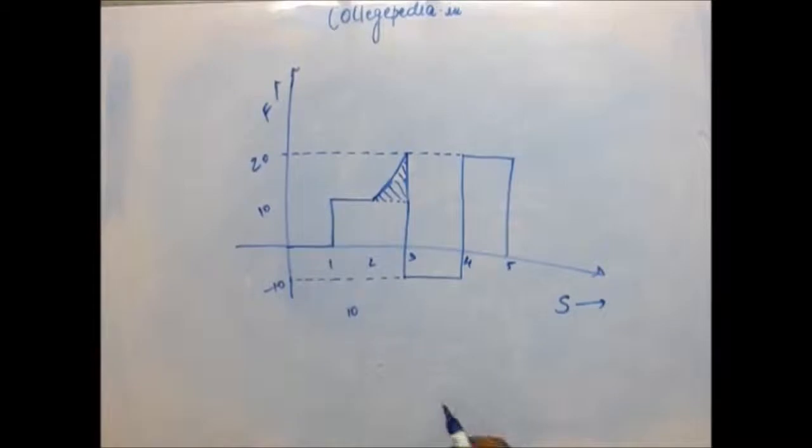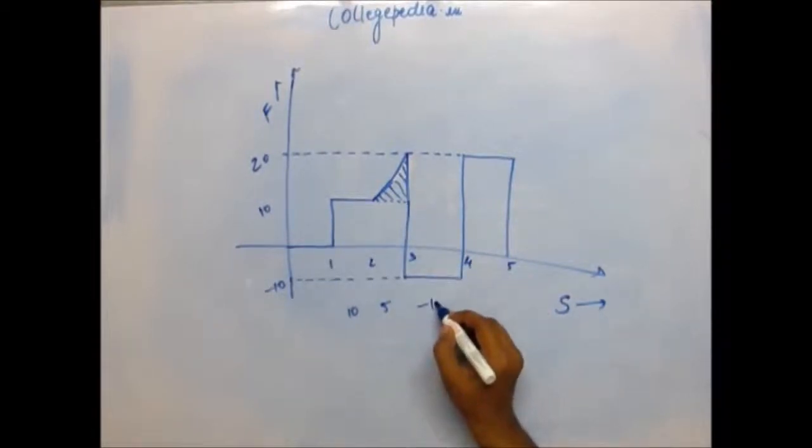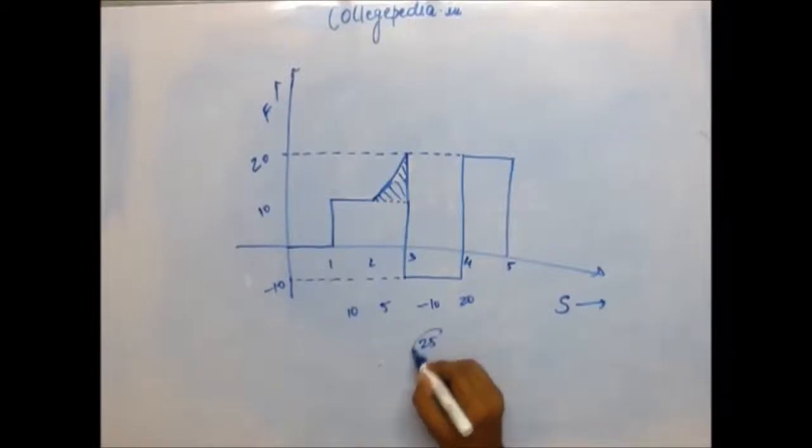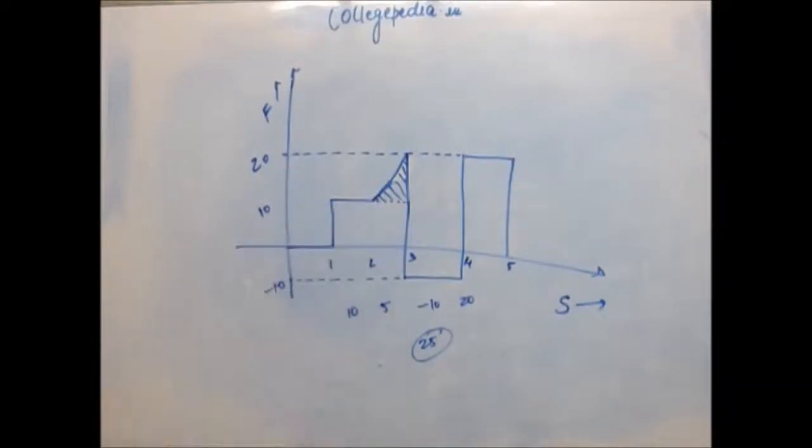Area of this curve is simple. Area of the curve would be 5, so work done in this region is 5. Work done in this region is minus 10. Total work done would be 25. Now it is very important for us to discuss this: why the area under this triangle will be equal to work done.